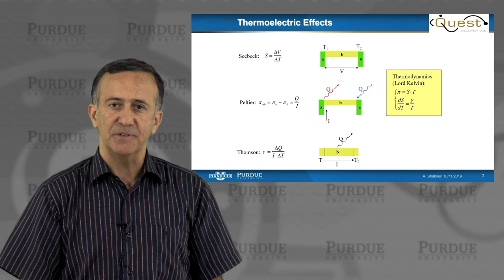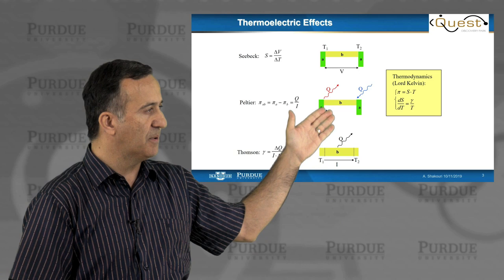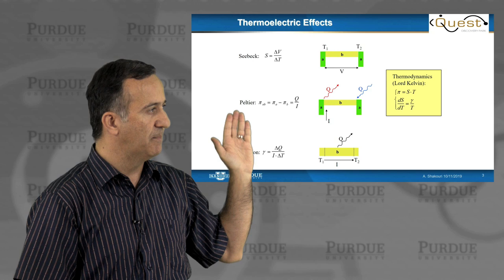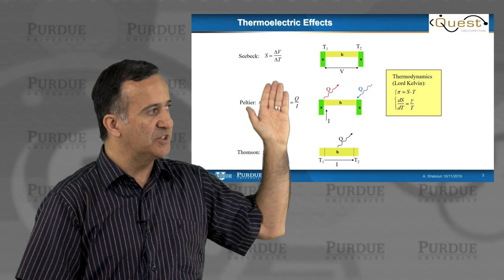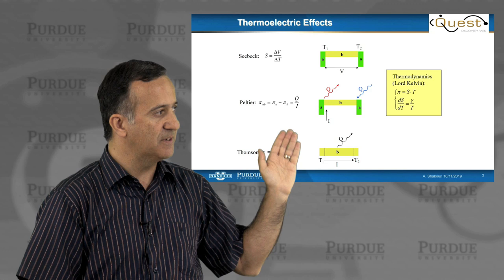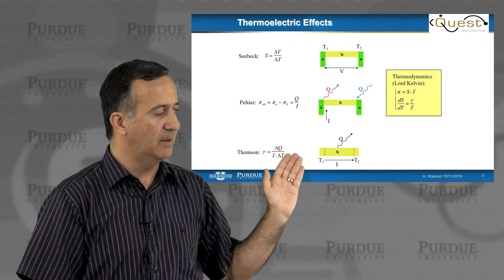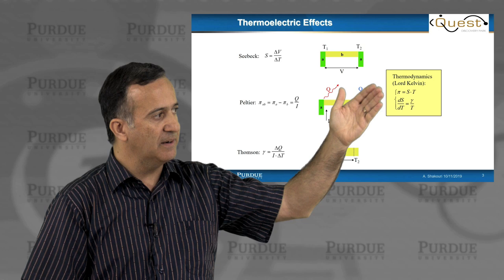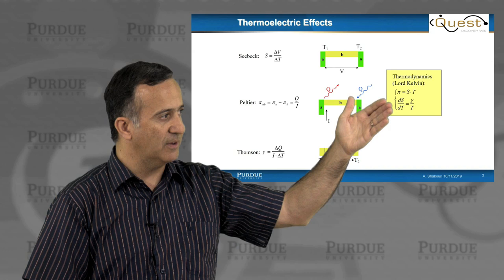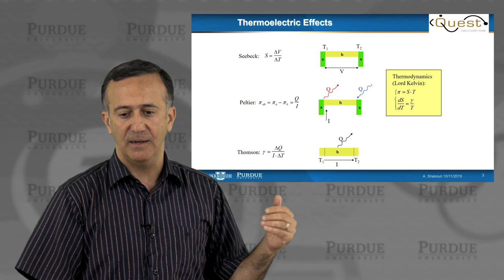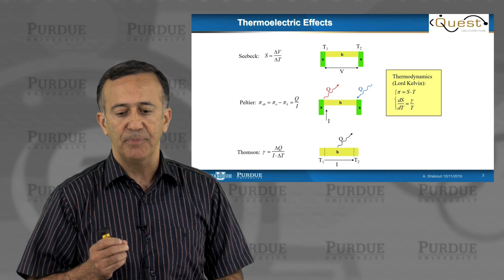You learned in the previous lectures by Professor Lundstrom that the three main properties that exist in the case of Seebeck coefficient, Peltier and Thomson, can easily describe the real energy conversion that happens when voltage is generated by temperature difference, heating or cooling is generated by current, and Thomson effect is really higher order effect that comes from the temperature dependence of the Seebeck coefficient. Kelvin found early on that Peltier coefficient and Seebeck coefficient are directly related, and he also found what is the Thomson coefficient. If you look at it fundamentally, there is only one material parameter that comes in for energy conversion.